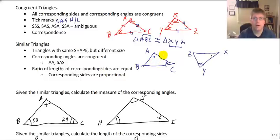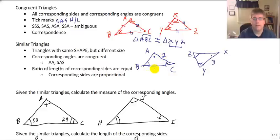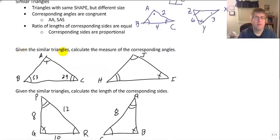The ratio of the lengths of the corresponding sides must be equal — the corresponding sides are proportional. So let's say side AC was 2 and side XY was 3. Angle B corresponds to angle Z, so the ratio of the sides is 2 to 3. If side BC is 4, then side XY must be 6 — also in the ratio of 2 to 3.